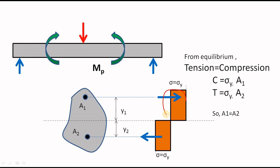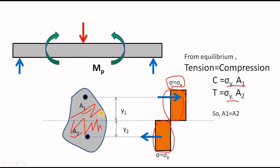As the section is in equilibrium, the total force in the compressed zone equals the total force in the tensed zone. The total compressive force is sigma-y into A1 and the total tensile force is sigma-y into A2. Cancelling sigma-y, we get A1 equals A2. So when the whole section becomes plastified — at the plastic state — the neutral axis simply divides the section into two equal parts.